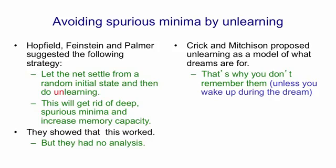Dreaming is paradoxical in that the state of your brain looks extremely like the state of your brain when you're awake, except that it's not being driven by real input — it's being driven by a relay station just after the real input called the thalamus. So the Crick and Mitchison theory at least explains functionally what the point of dreams is: it's to get rid of those spurious minima.